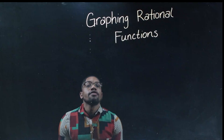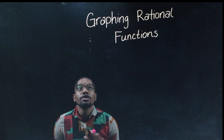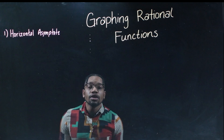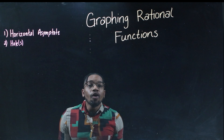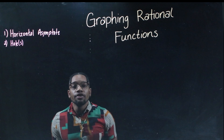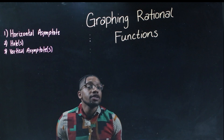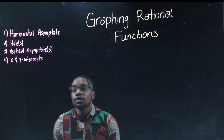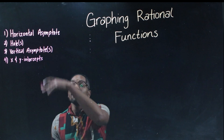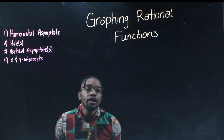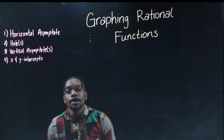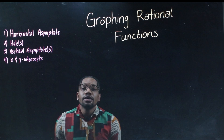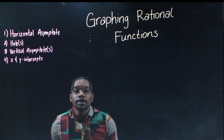When you're graphing rational functions, there are really five things that you have to find: your horizontal asymptote, any holes that might be in your graph, your vertical asymptotes — and there might be more than one — and your x and y intercepts. Once you find all five of these things, you can go ahead and graph your rational function.